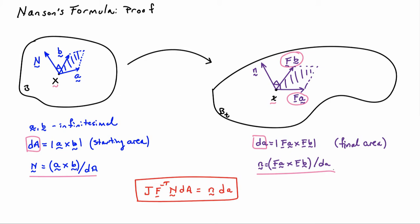I can rewrite this slightly by plugging in the definitions for N, D capital A, little n, and D little a, and that allows me to write J F-inverse-transpose (A cross B) equals FA cross FB. This is what we're going to try and prove.